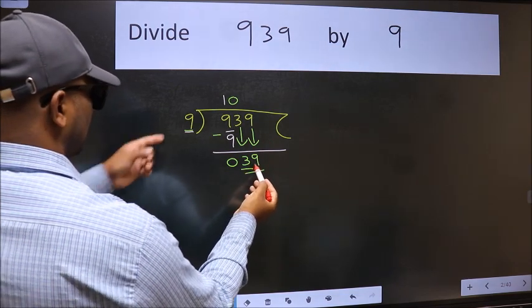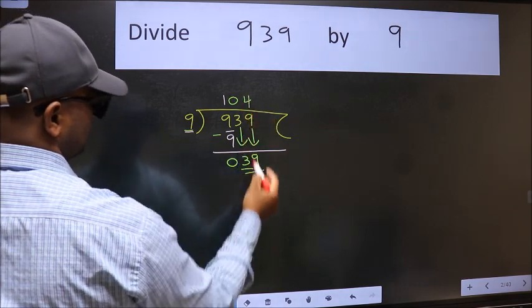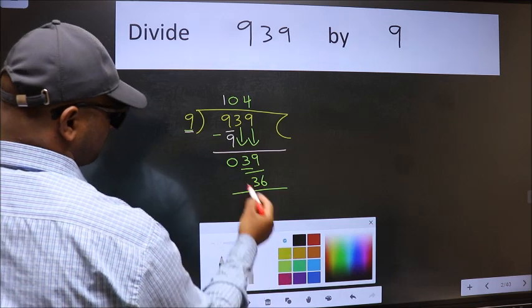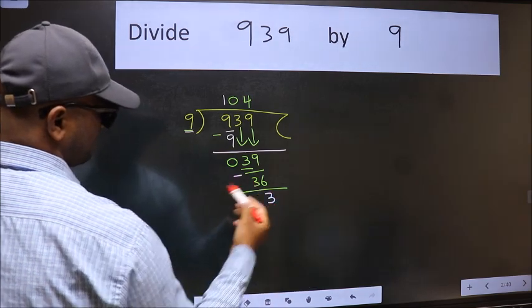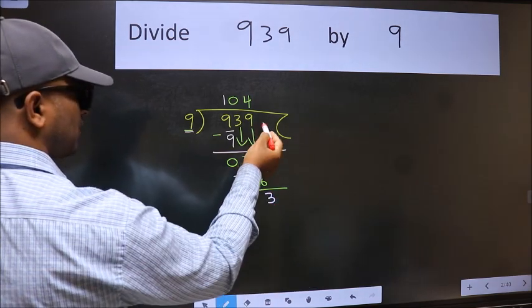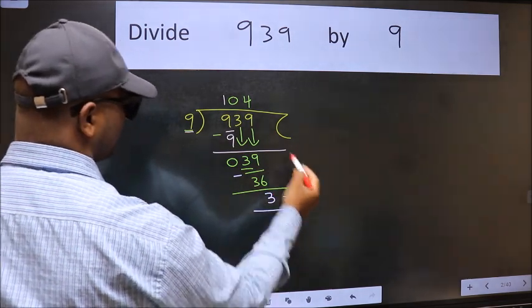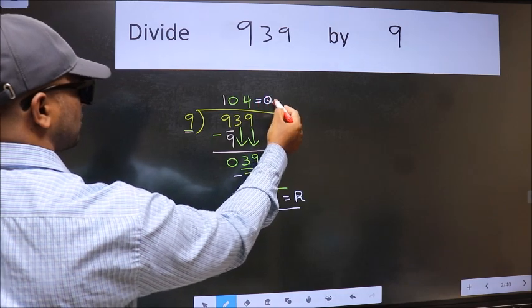Now 39. Our number close to 39 in the 9 table is 9 times 4 is 36. Now we should subtract. We get 3. No more numbers to bring it down. So we stop here. This is our remainder and this is our quotient.